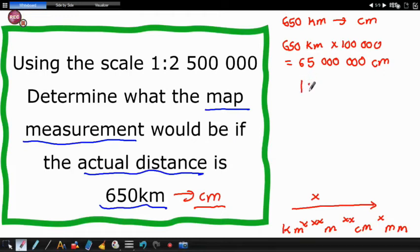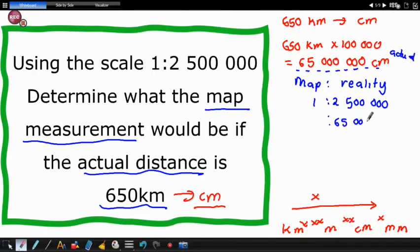And then we go ahead and review our calculations. We'll have map as to reality. Then we'll have one is to 2,500,000. Now what do you have? You have this that you want to put in. And what is this? This is the actual distance, right? So you're going to put 65 million there, and then you'd have x. Here comes the seventh method.